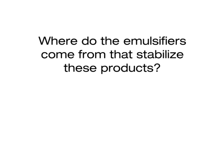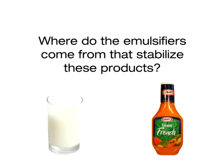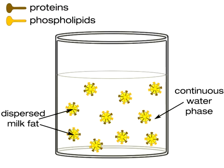But where do these emulsifiers come from that stabilize these products? Some emulsifiers are found naturally in foods, such as in milk, whereas other emulsifiers need to be added to foods, such as in salad dressings. In the case of milk, naturally present proteins and phospholipids in the milk emulsify the fat globules and prevent them from separating from the continuous water phase.